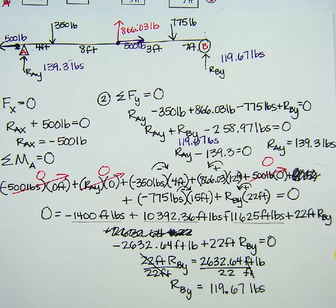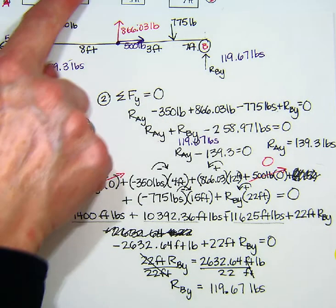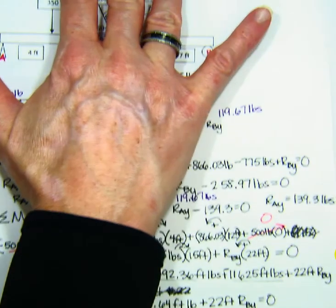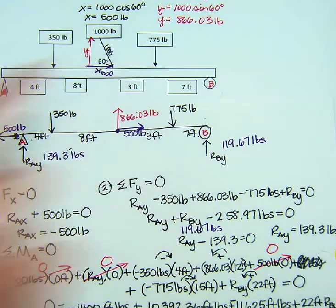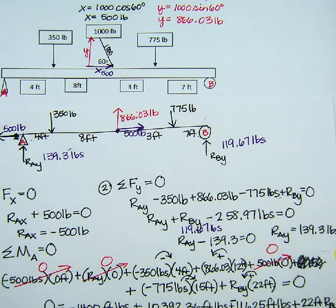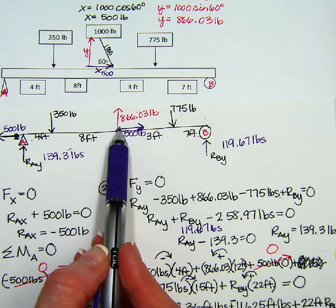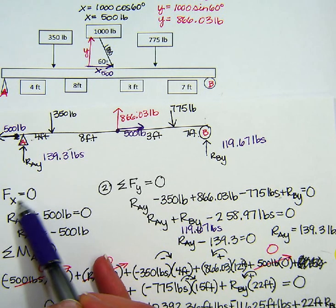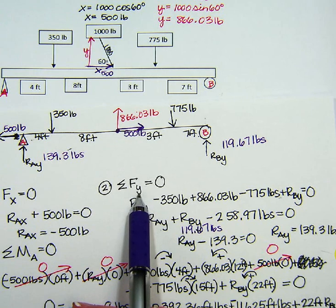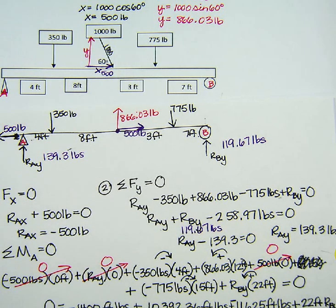And that's example two. Don't forget, when you have these forces, let's bring this back down, when you have these forces that are in a diagonal direction, we need to break them down into their X and Y components because we're always looking at the forces in X, the forces in Y, and the moments. Thank you for listening.